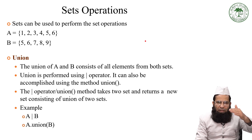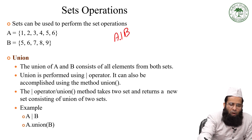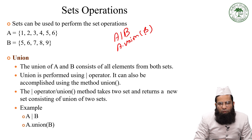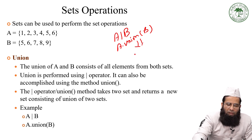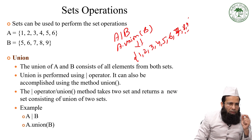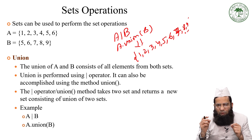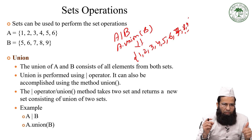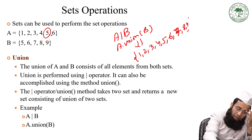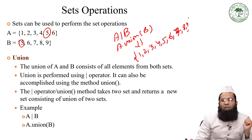Sets can be used to perform set operations. For union, you can write a | b or use a.union(b). Union gives all elements from both sets. In case of union, if the sets have a common item, that item appears only once in the result. So if 5 is in both a and b, only a single 5 will be in the union.